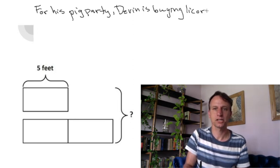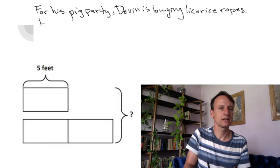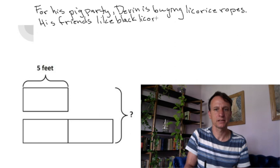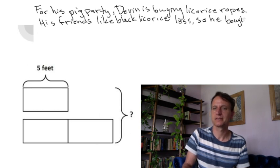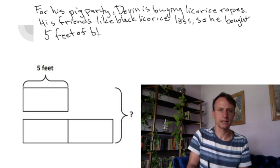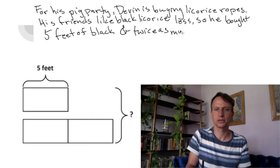licorice ropes. His friends like black licorice less, so he bought five feet of black and twice as much red.